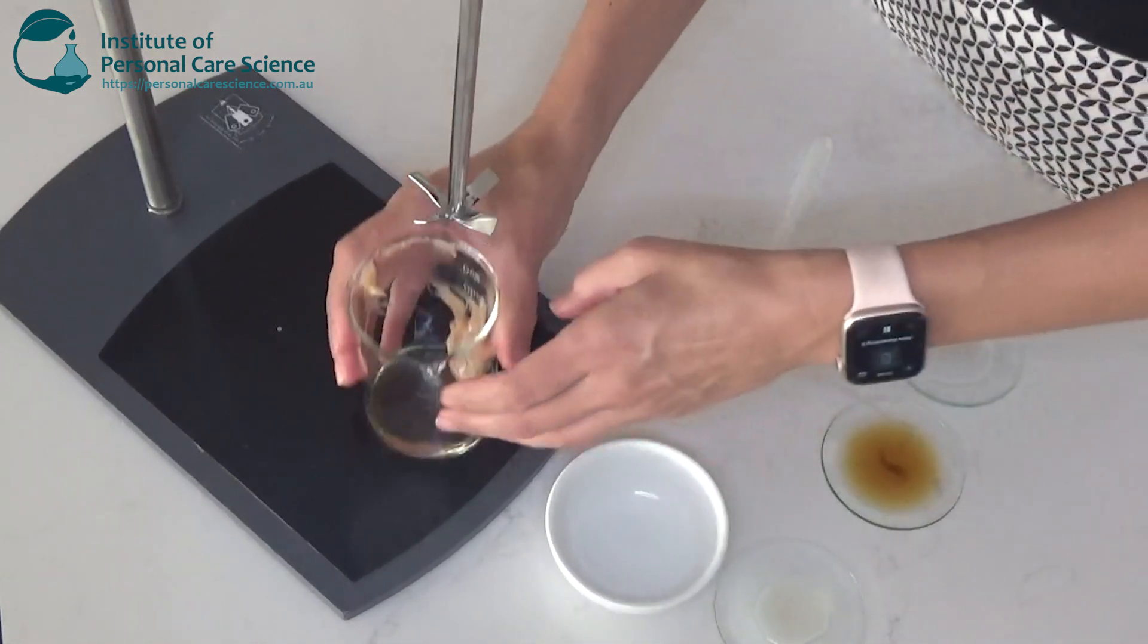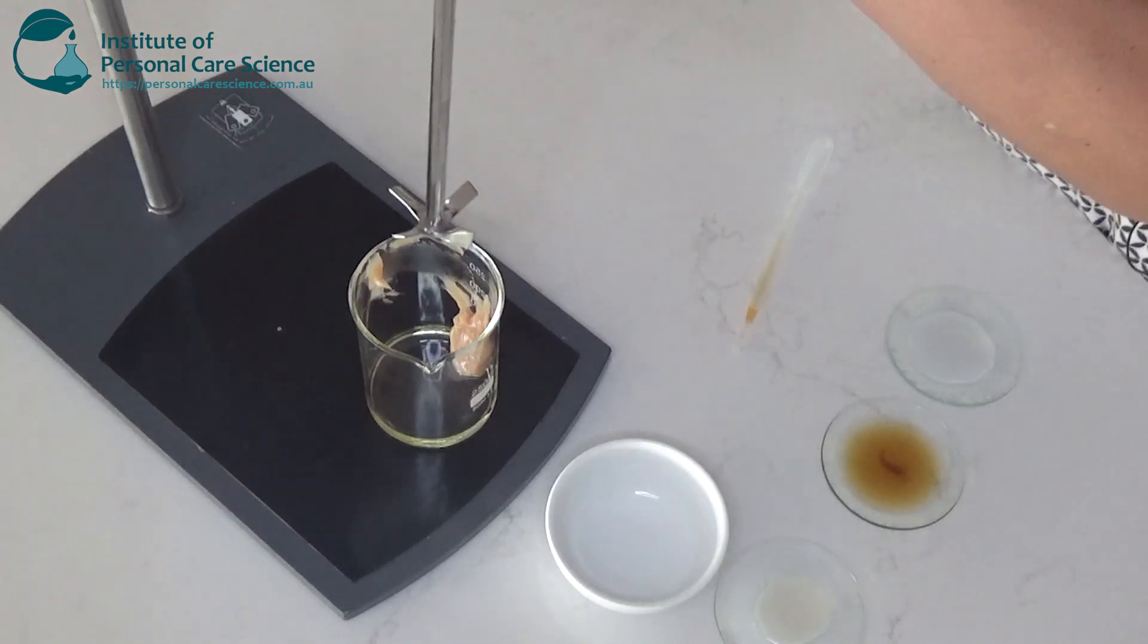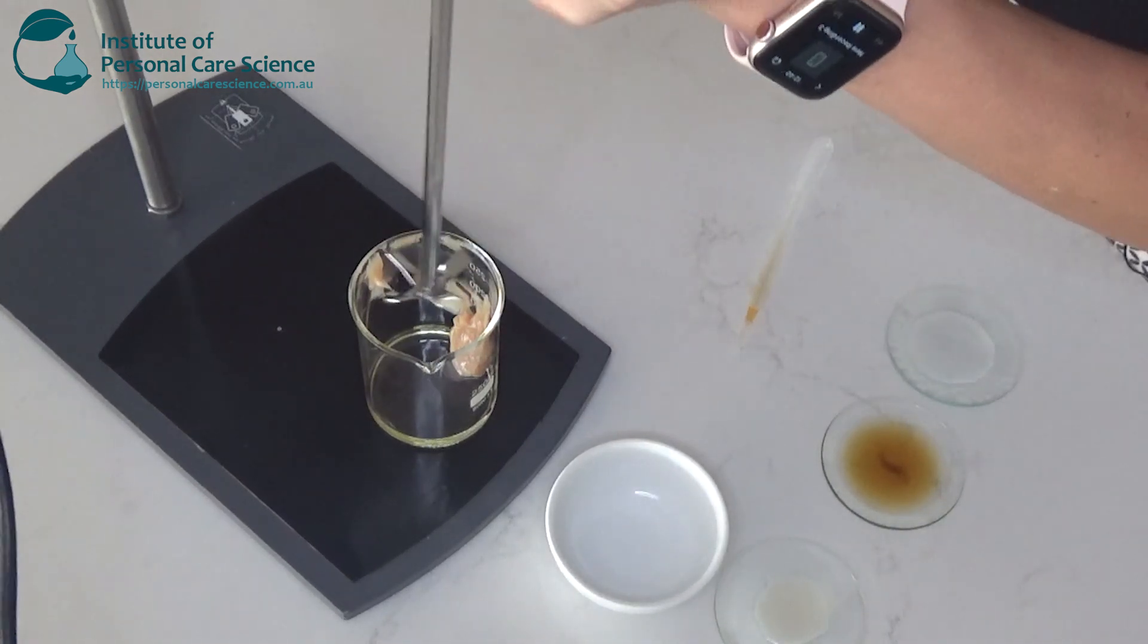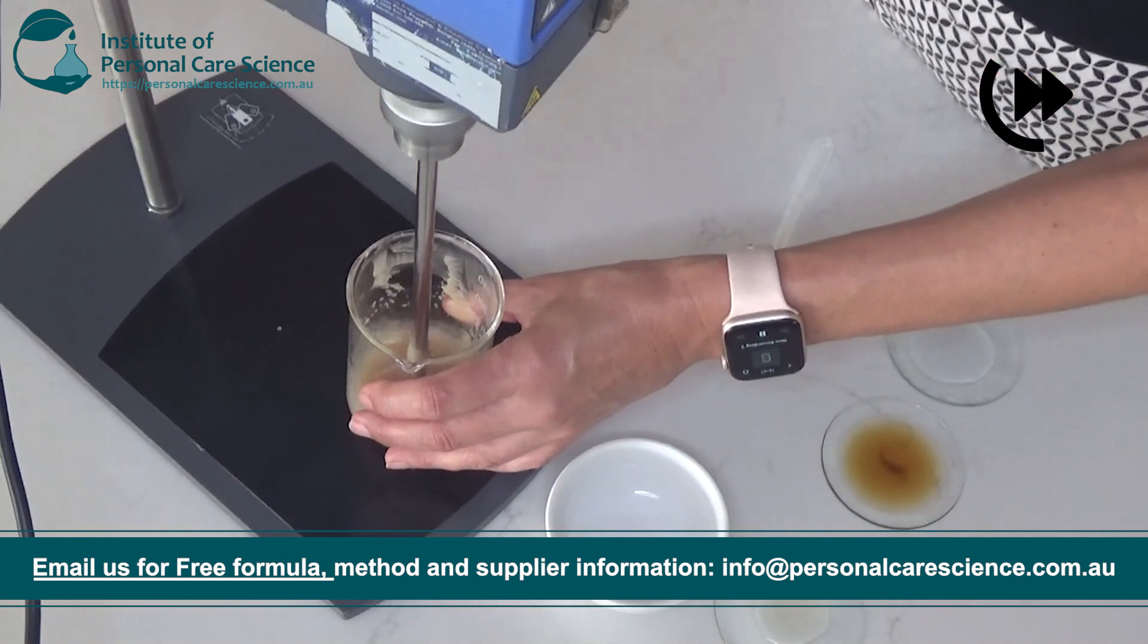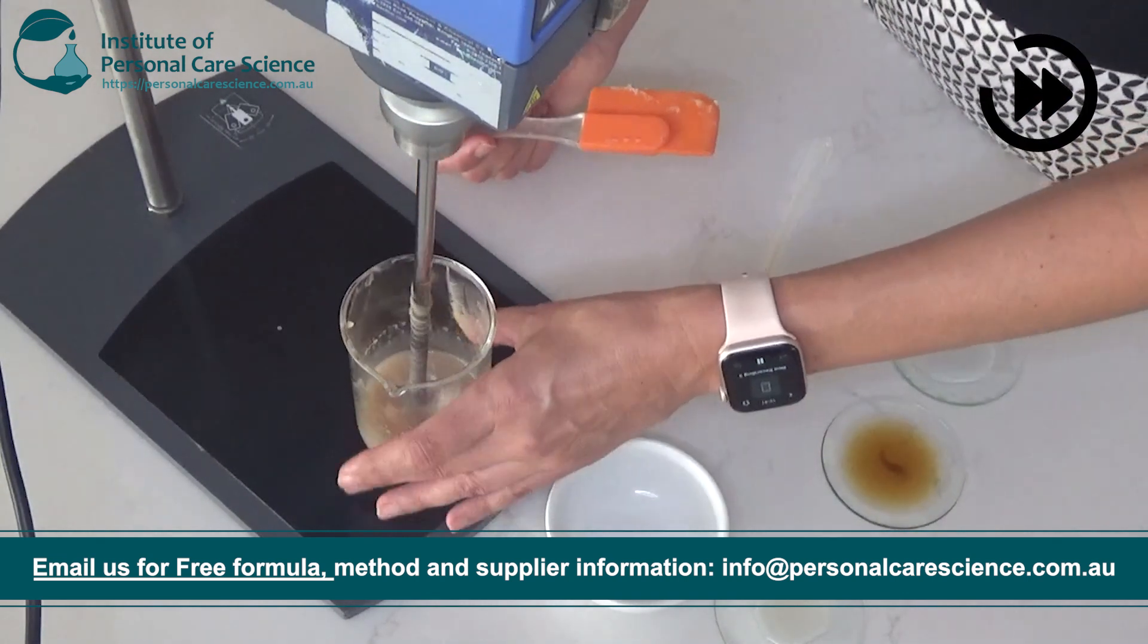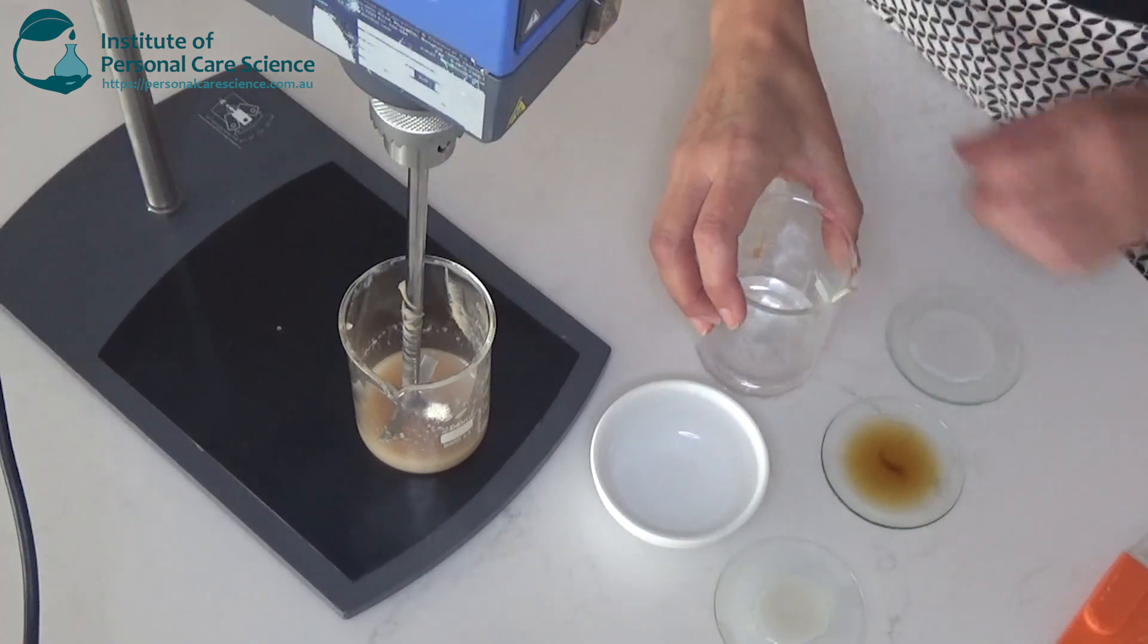I'm just going to put the oil phase on the mixer just to make a smooth paste with that bentone. To my water phase I will add some propane diol.